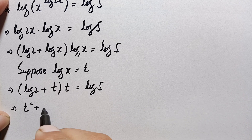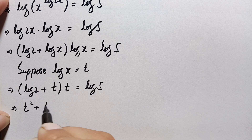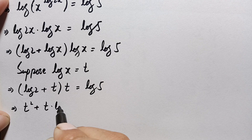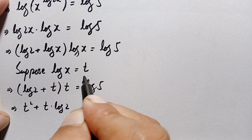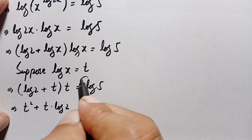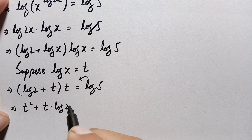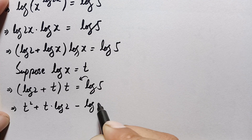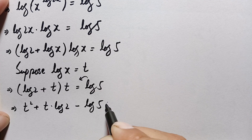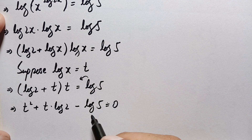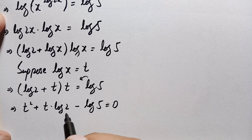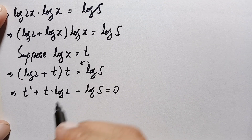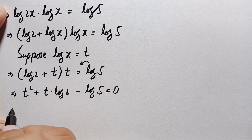Taking this to the left hand side, we get t squared plus t·log 2 minus log 5 equals 0. Now we can write 2 as 10/5, so we will replace 2 with 10/5.